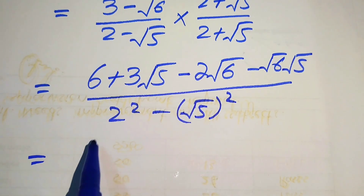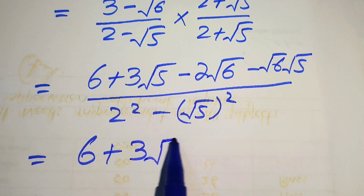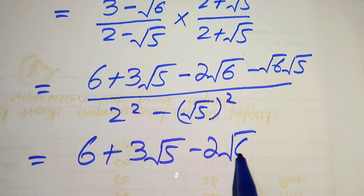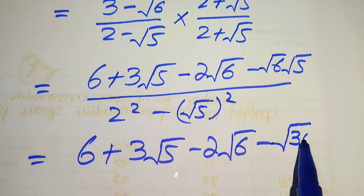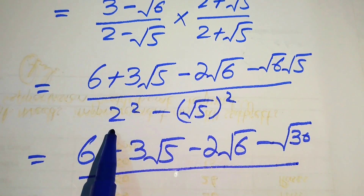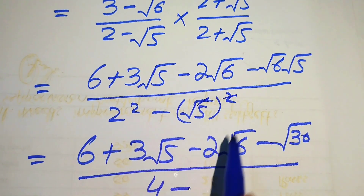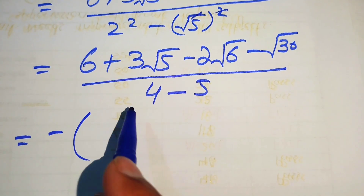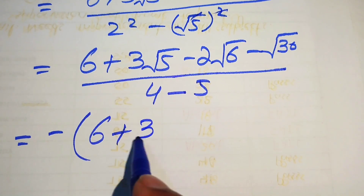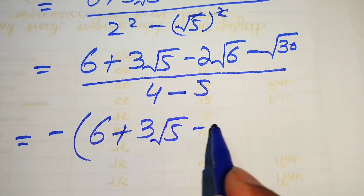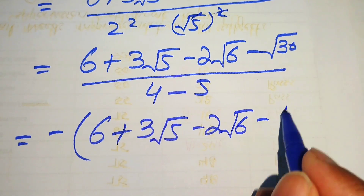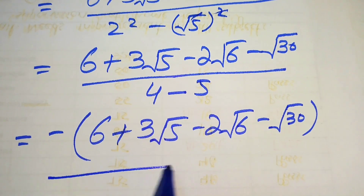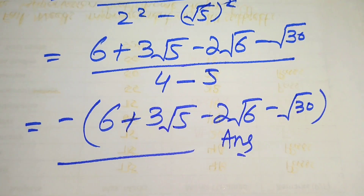This simplifies to 6 + 3√5 − 2√6 − √30, divided by 4 minus 5, which equals minus 1. So the final simplified form is: 6 + 3√5 − 2√6 − √30, divided by −1, which gives us the required answer. Thank you so much for watching this video — please subscribe to my channel for more exciting videos.